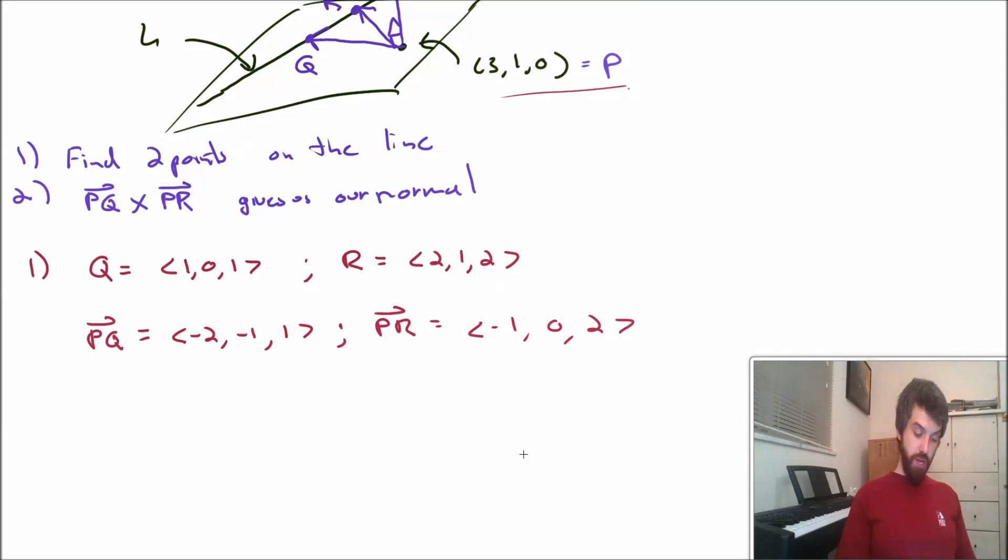I've got my PQ and my PR. Then I want to take the cross product of these two different things. I'm going to create my normal vector, which is the cross product PQ cross PR. I'm going to use this determinant trick. I'm going to put the i hat, the j hat, the k hat. I'm going to put my PQ first, so that was minus 2, minus 1, 1, and then minus 1, 0, and 2.